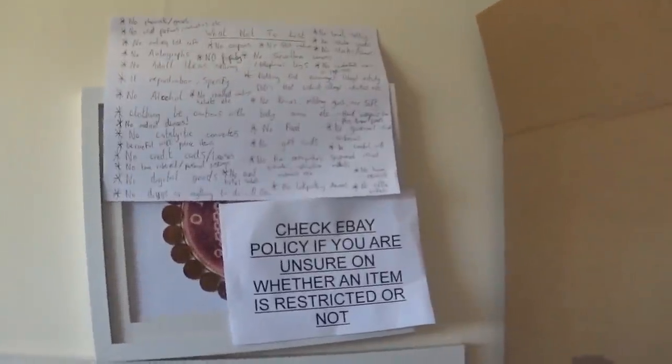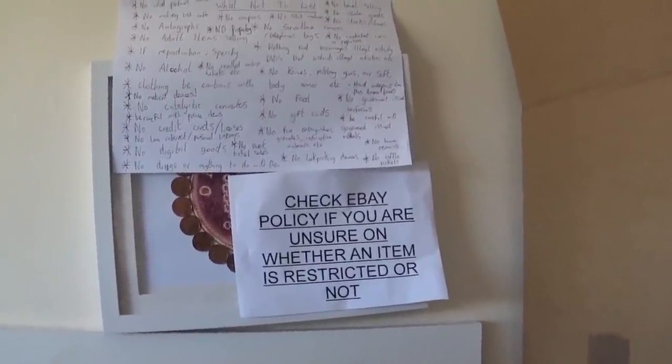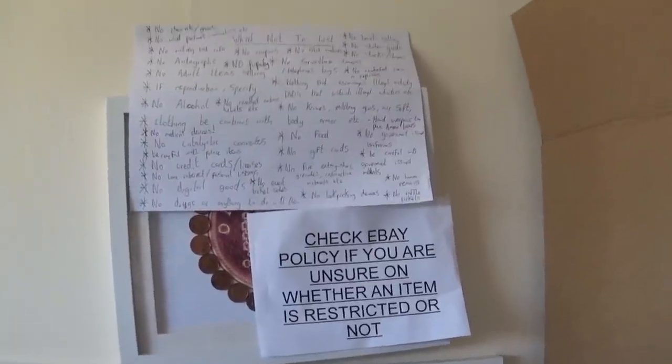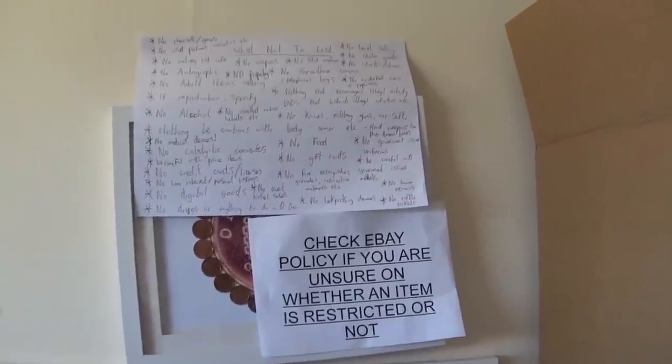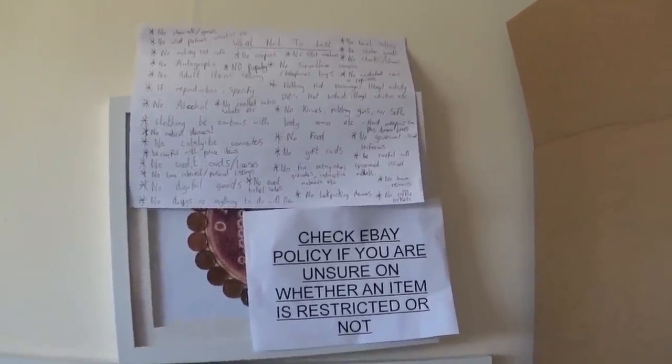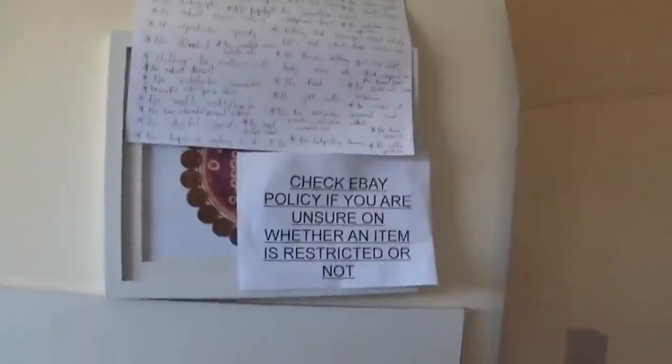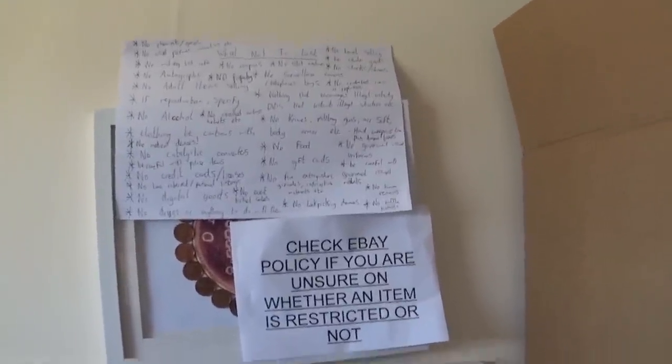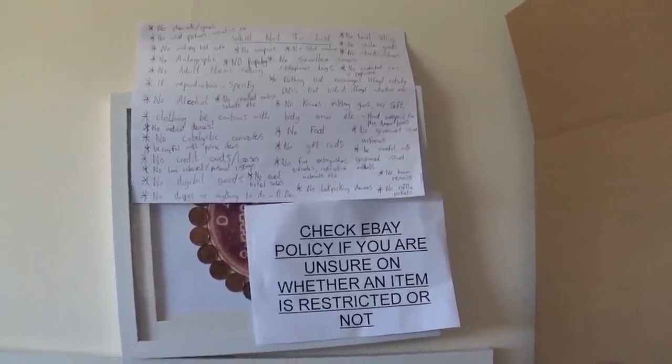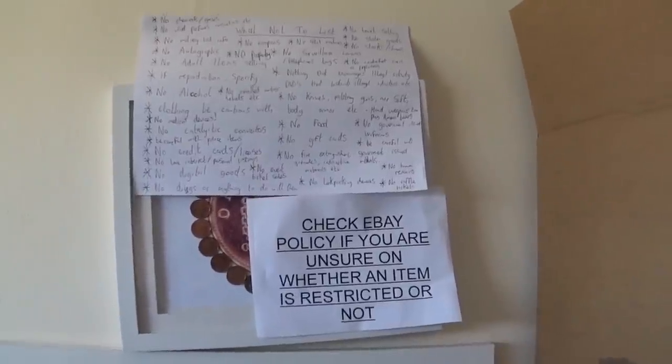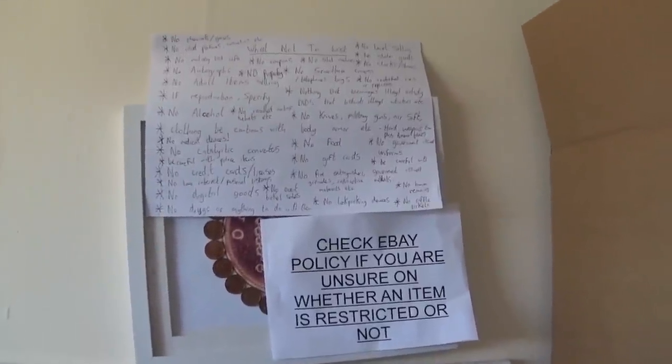Oh, also I thought I would show you very quickly. Since I got that ban, I've actually put that up there. So it's check eBay policy if you are unsure on whether an item is restricted or not. I've wrote out a complete list of not necessarily all the items that are completely banned. There's some items on that list that aren't necessarily completely banned. Like, for example, I think there's autographs on there. You're fine to sell autographs as far as I'm aware. But I've put that on there just to make myself a little bit more stringent and a little bit more aware of all the items that might be even a little bit of a grey area or harder to sell.